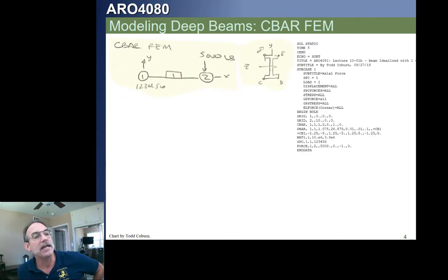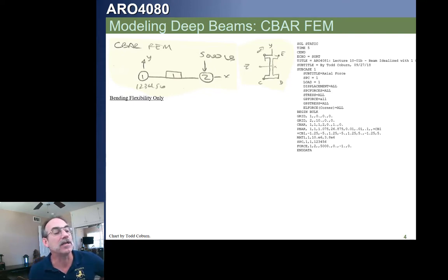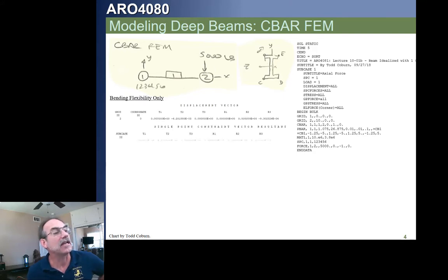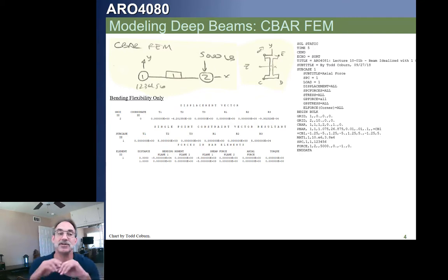If we model like this, we put in our properties of the element. We've got two grid points, one bar element with a property and a material, an SPC at the left end, and a force at the right end. If we only account for bending flexibility — only having the P-bar card as we see here — then we get a deflection which actually matches perfectly our solution. You'll notice if we do this kind of model, we get a deflection which perfectly matches the bending solution. Now remember, our theoretical bending solution was wrong.